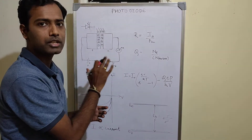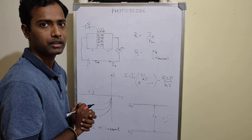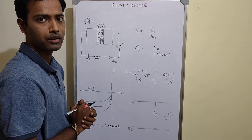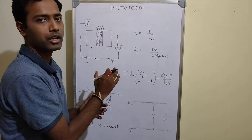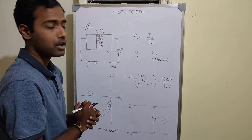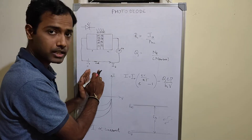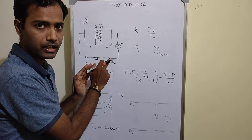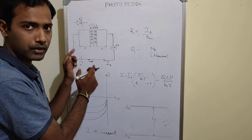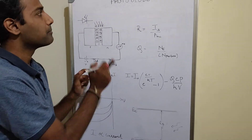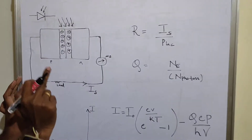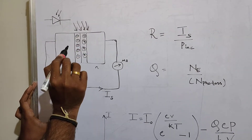A normal PN junction diode operates in forward bias only — it will not operate in reverse bias. Whereas a photodiode operates in reverse bias. In a PN junction diode, the current is generated because of the voltage being applied — if it is in forward bias it will generate current. But in a photodiode, the current is generated because of photons.